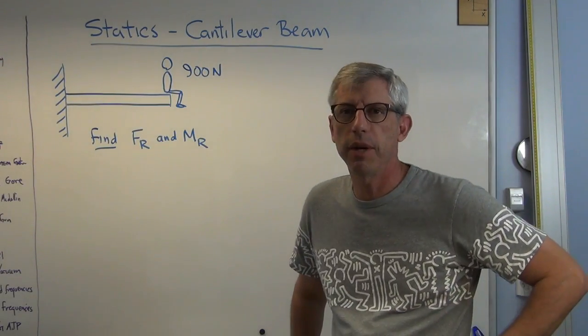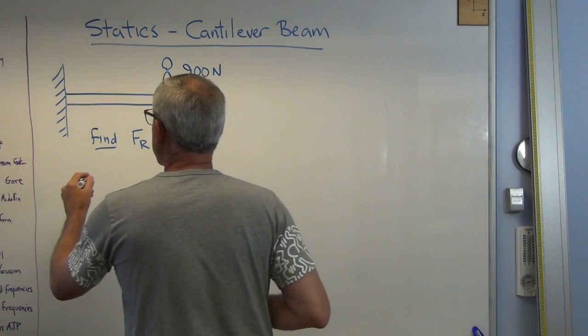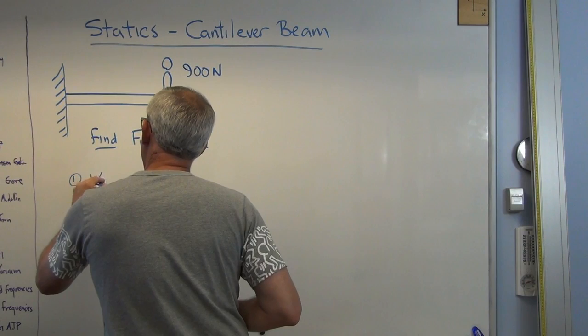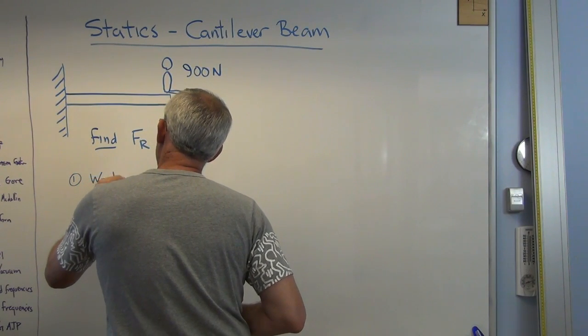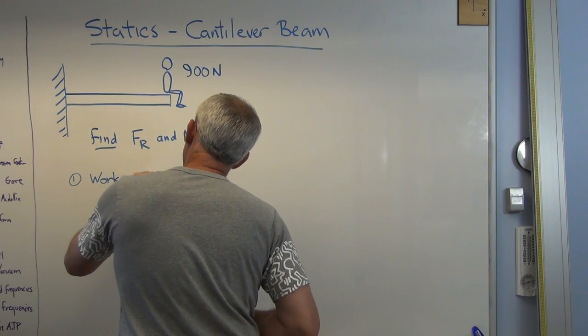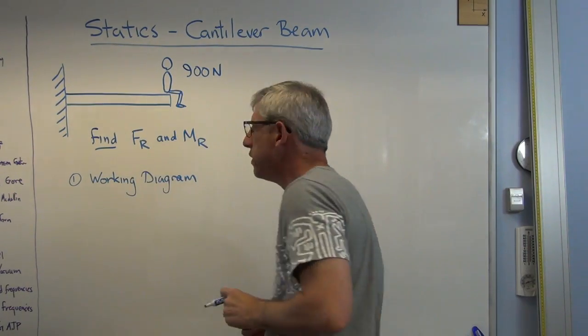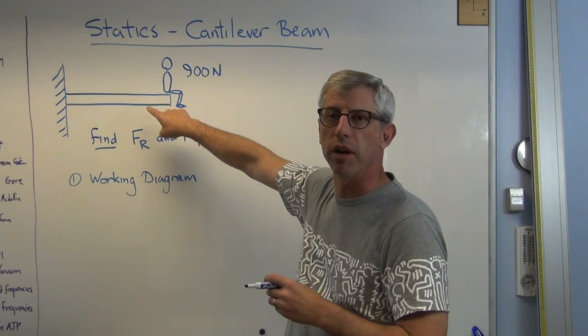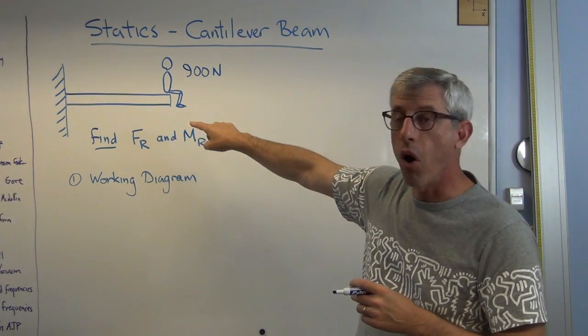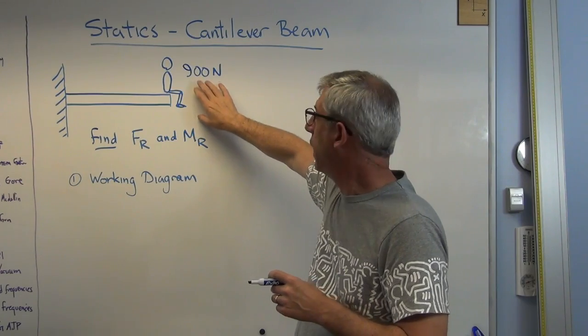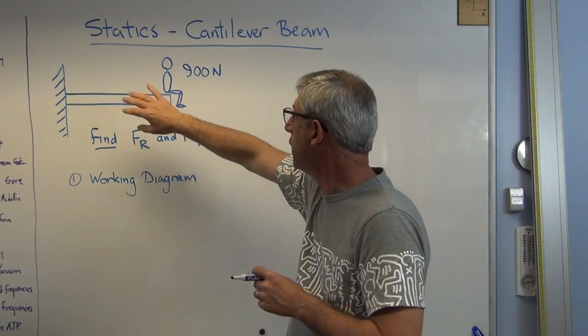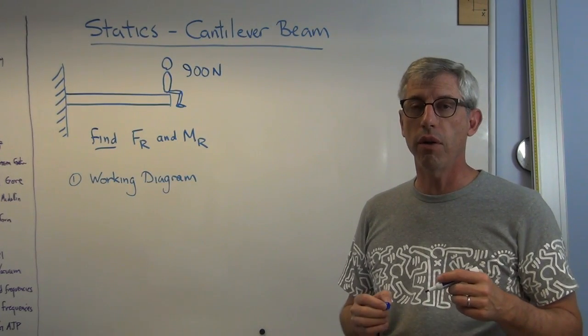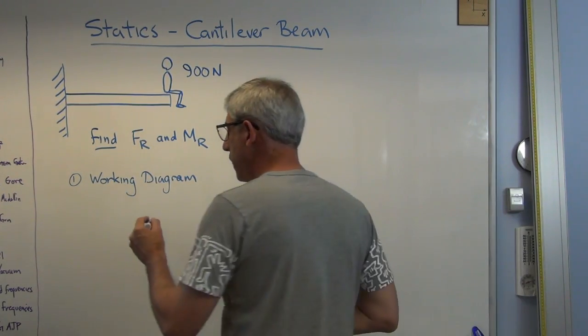Well, how do you do this? There's a couple of steps. One, there is what they call a working drawing or working diagram. And that's draw a picture of what's going on. That's a working diagram. It doesn't have to be artwork, but it does have to be clear. It has to clearly show what's going on. This clearly shows what's going on.